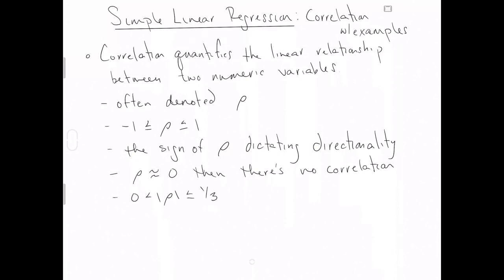If rho is between, in absolute value, 0 and a third, so maybe rho in absolute value is like 0.25, then that implies little correlation or maybe weak correlation.